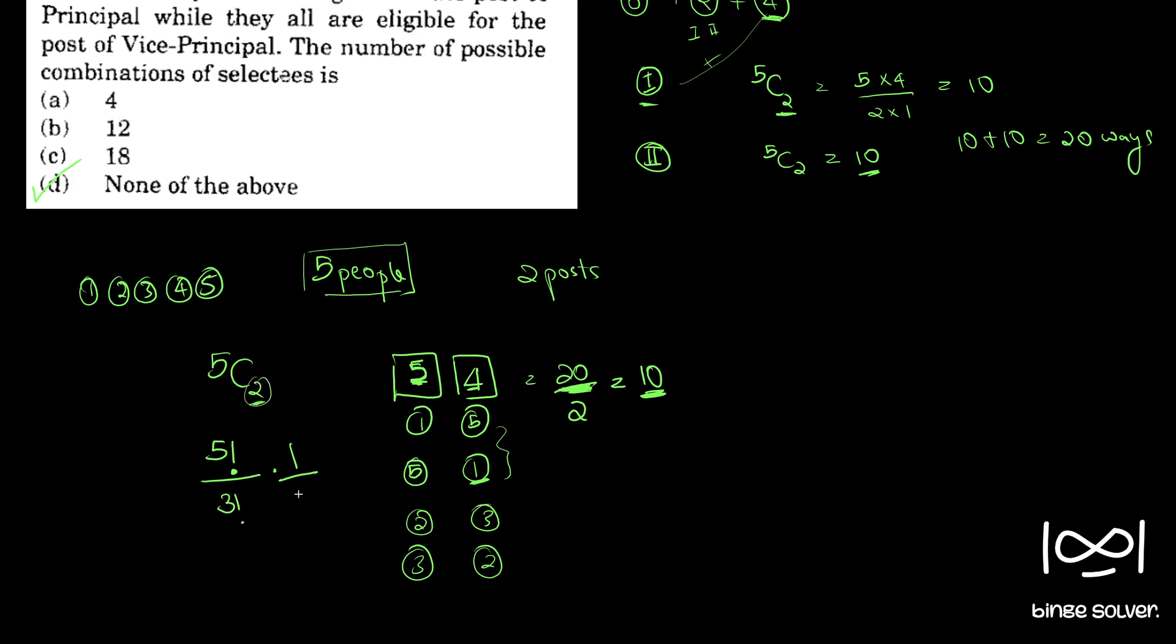nCr can be found out by n factorial divided by n minus r factorial times r factorial. This is the formula.